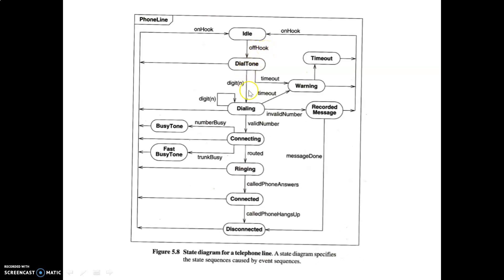The transitions show when state changes happen. From idle to dial tone, the event is 'off hook' — you lift the receiver. From dial tone to dialing, the event is dialing digit N. From dialing to connecting, it transitions when a valid number is dialed. Once routed, it enters ringing state; once the phone is answered, it enters connected state. When you finish and hang up, it goes to disconnected. If the number is busy it goes to busy tone; if the trunk is busy, fast busy tone; if it's an invalid number, you get a recorded message. All possibilities — including errors — are covered, and the diagram returns to the idle state.